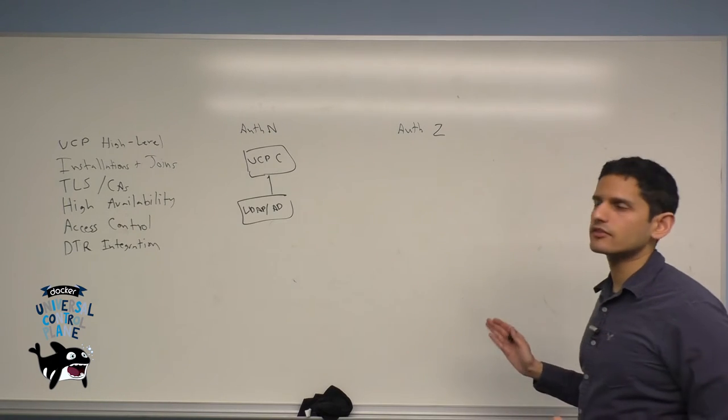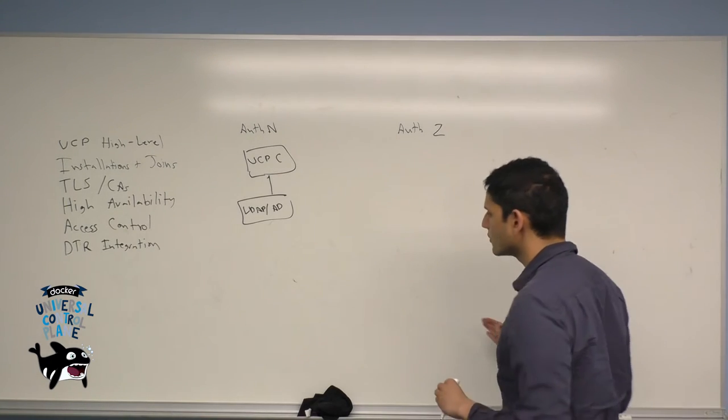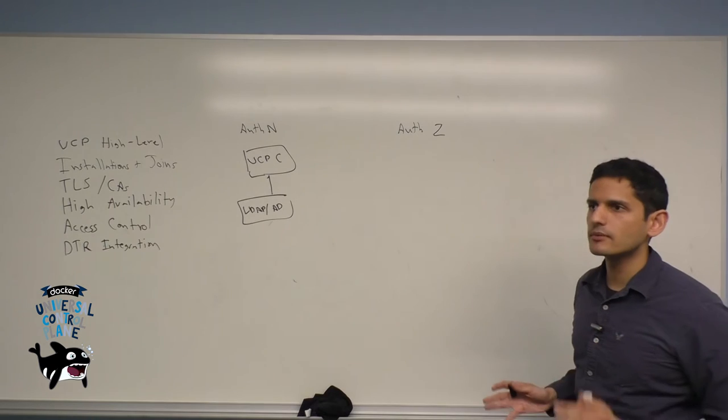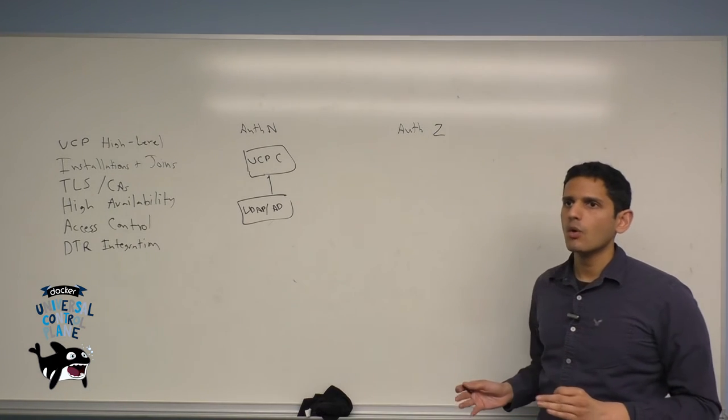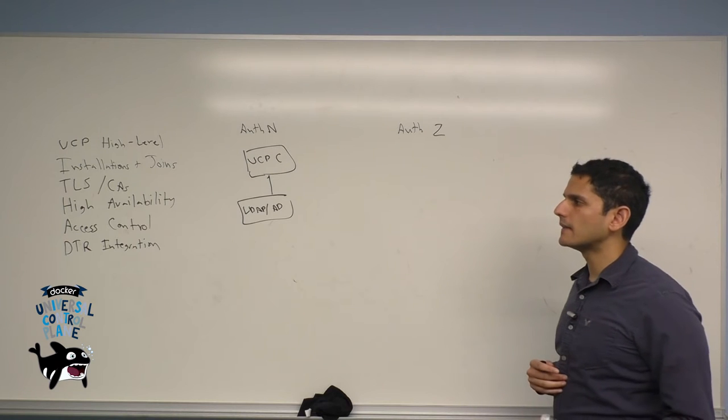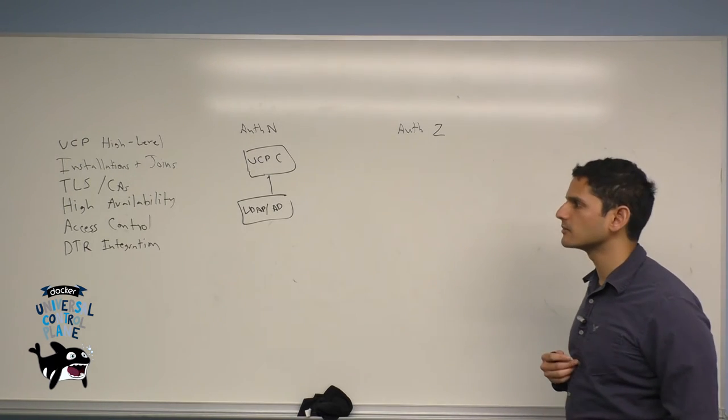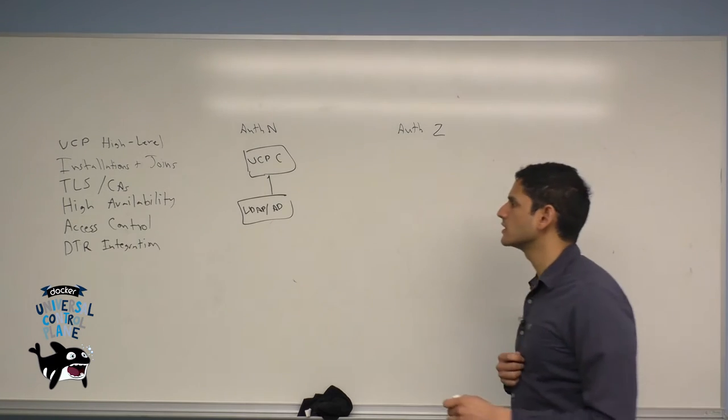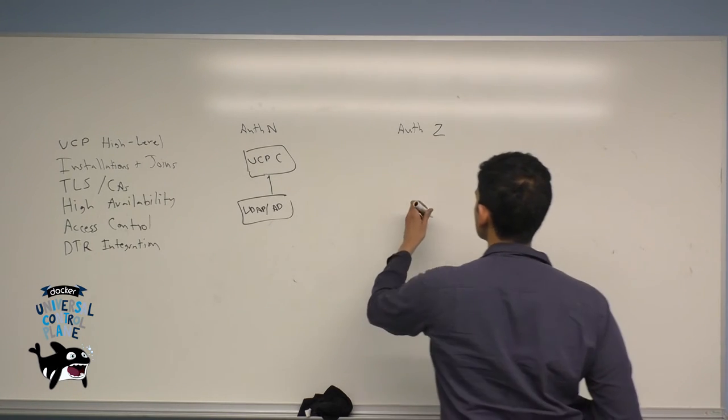Let's switch over and talk about how auth-Z works. In UCP, we have two different ways of enforcing access control. One is setting default permissions for individual users, and the other is providing team-based permission to container labels. Let's go through each of those in sequence.